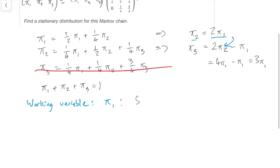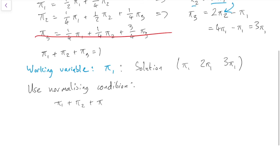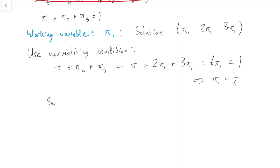And so my solution in terms of the working variable π₁ is π₁, that π₂ is 2π₁, and π₃ is 3π₁. That's not solved yet, because that's still in terms of the working variable, but now I can use the normalizing condition, which is that they add up to 1. So π₁ plus π₂ plus π₃ is, from that solution, it's π₁ plus 2π₁ plus 3π₁, which equals to 6π₁. And the normalizing condition is that they have to add up to 1. So if 6π₁ equals 1, then π₁ equals the sixth, which means that π₂ equals 2 times the sixth equals the third, and π₃ equals 3 times the sixth, which equals a half.